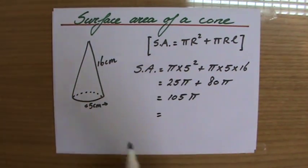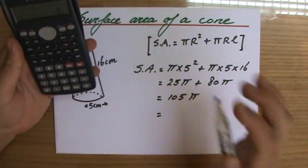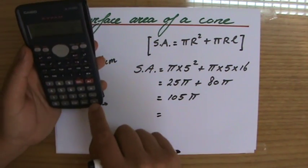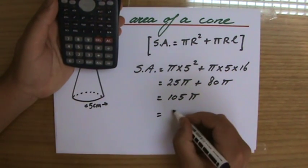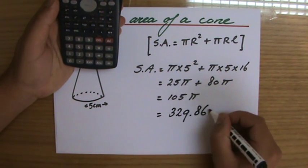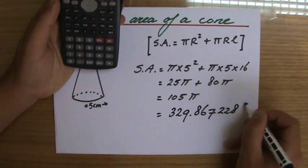And then in the end I could grab my calculator and work it out, 105 times pi. My calculator tells me 329.8672286.